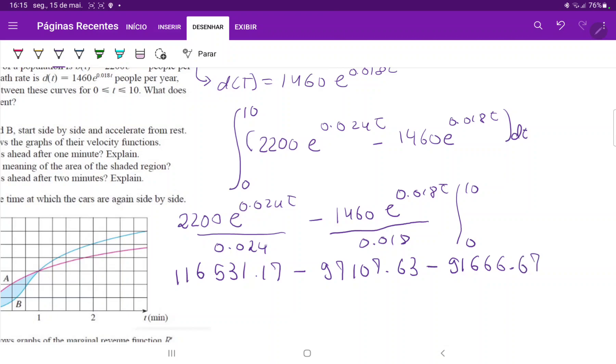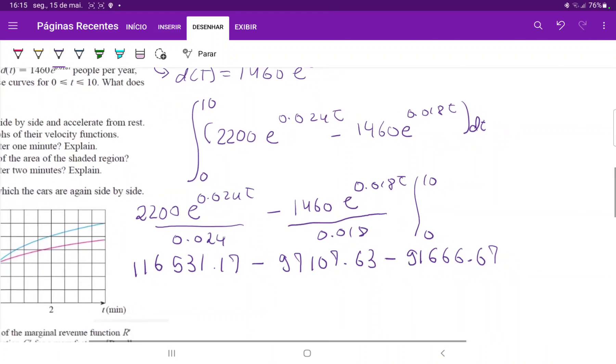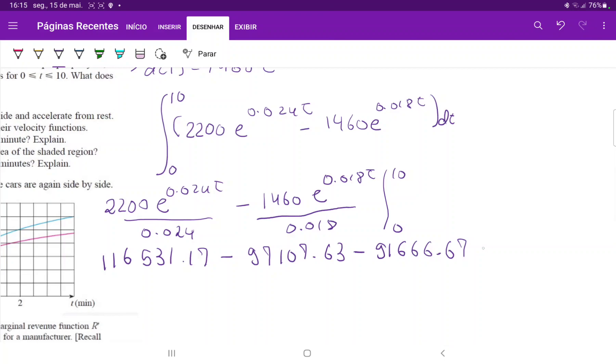minus is plus. So plus 1460 divided by 0.018, because e to the power of 0 is just 1, minus 97107.63,